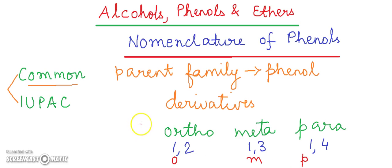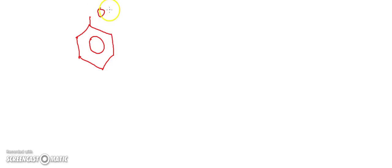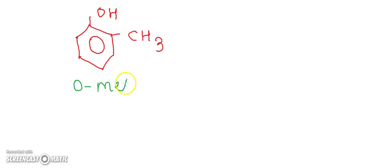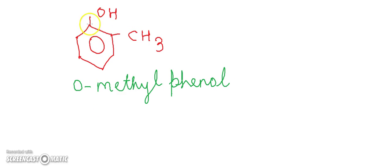Let's see how compounds are named in the common system with examples. For example, if this is the phenol structure with an OH group as a functional group and we have CH3 as a substituent, the name of this compound in the common system is ortho-methyl phenol. This is position one, and the CH3 is at position two, so according to the common system this is O-methyl phenol or ortho-methyl phenol.